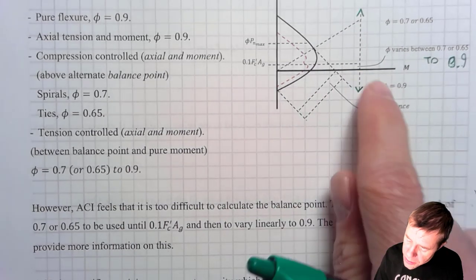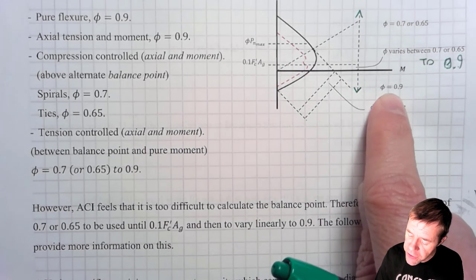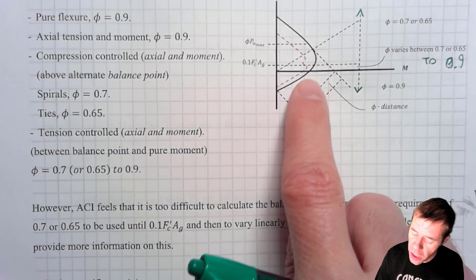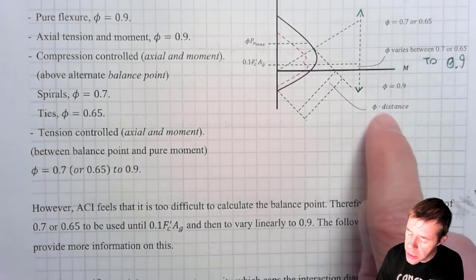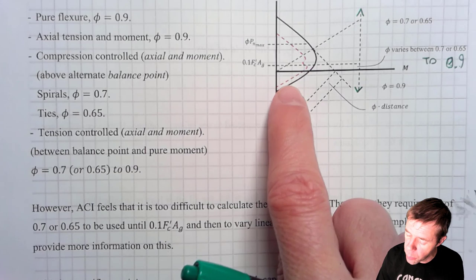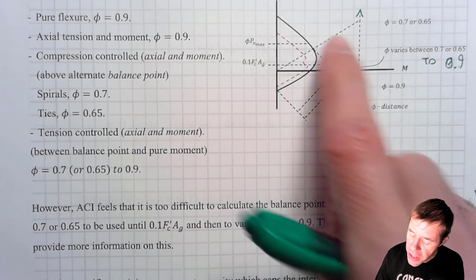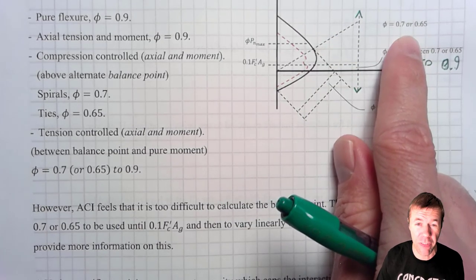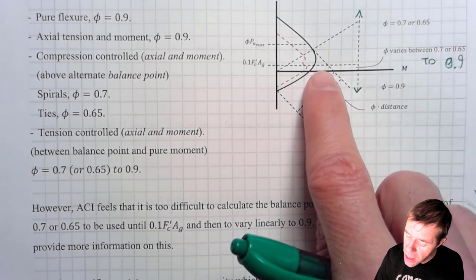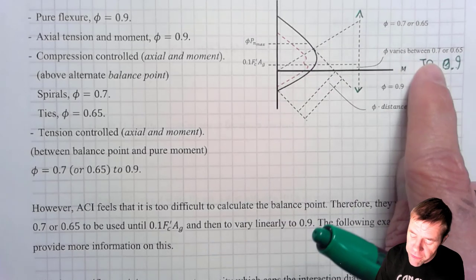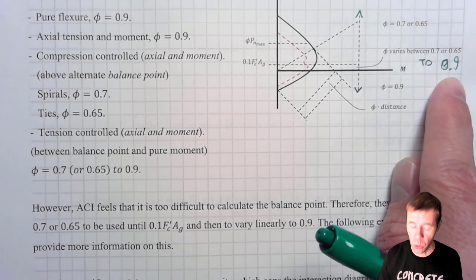But this is just this region right here. What I've just basically told you is anything at the x-axis or below, anything in here is going to have a phi factor of 0.9. That means if I calculate something on the interaction diagram, I reduce that by 0.9. That dimension inward is 0.9 less, all the way up until the x-axis. Now, at this balance point and above, it's going to be 0.7 or 0.65, depending if I have spirals or ties. And in this in between, the point between the balance point and this pure moment line here, that is going to vary between 0.7 to 0.9 or 0.65 to 0.9, depending if you have spirals or ties.